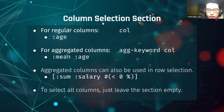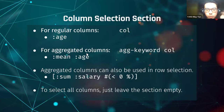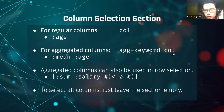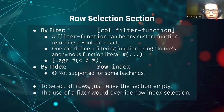The second section is the column selection section. For regular columns, use the keyword for that column — for example, if there is a column for age, write :age to select it. For aggregated columns — since we support group-by — you can provide aggregation functions. For example, to get the mean age of each group, write :mean :age. The aggregated columns can also be used in the row selection section as shown in the previous examples.